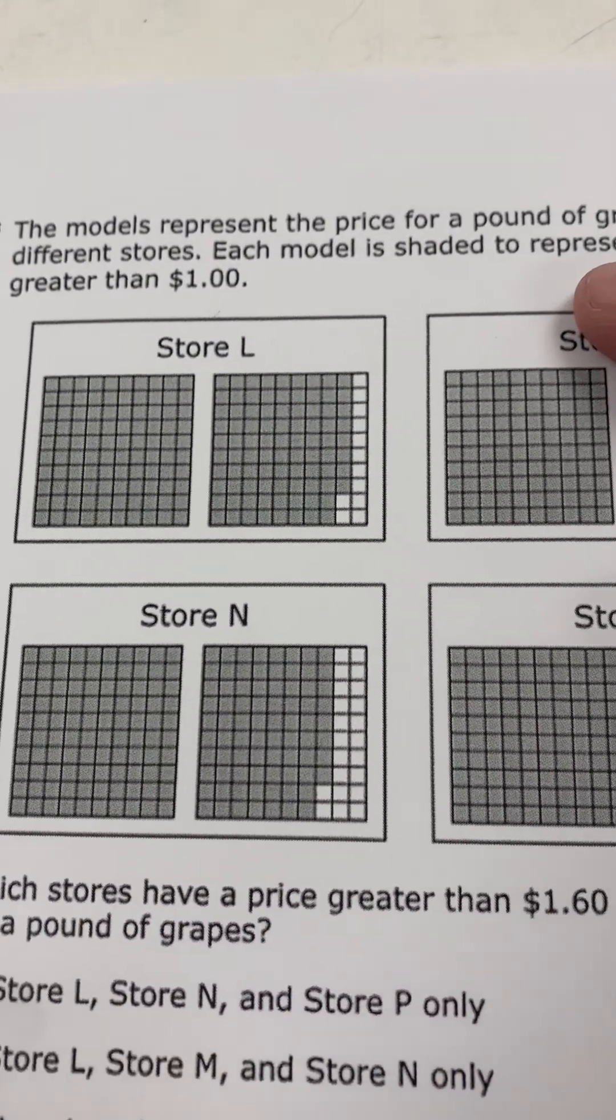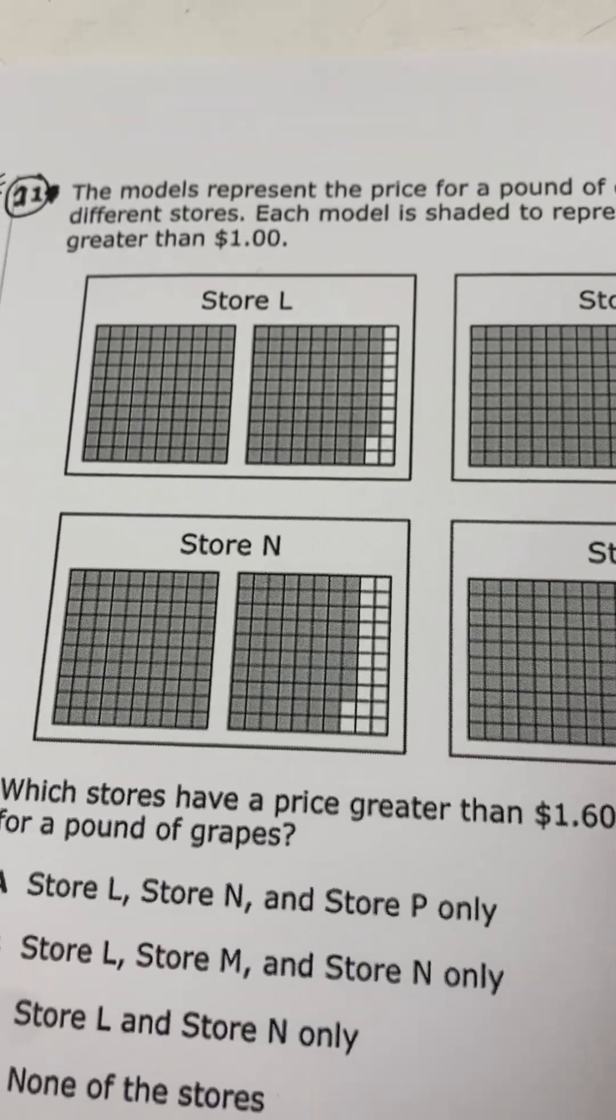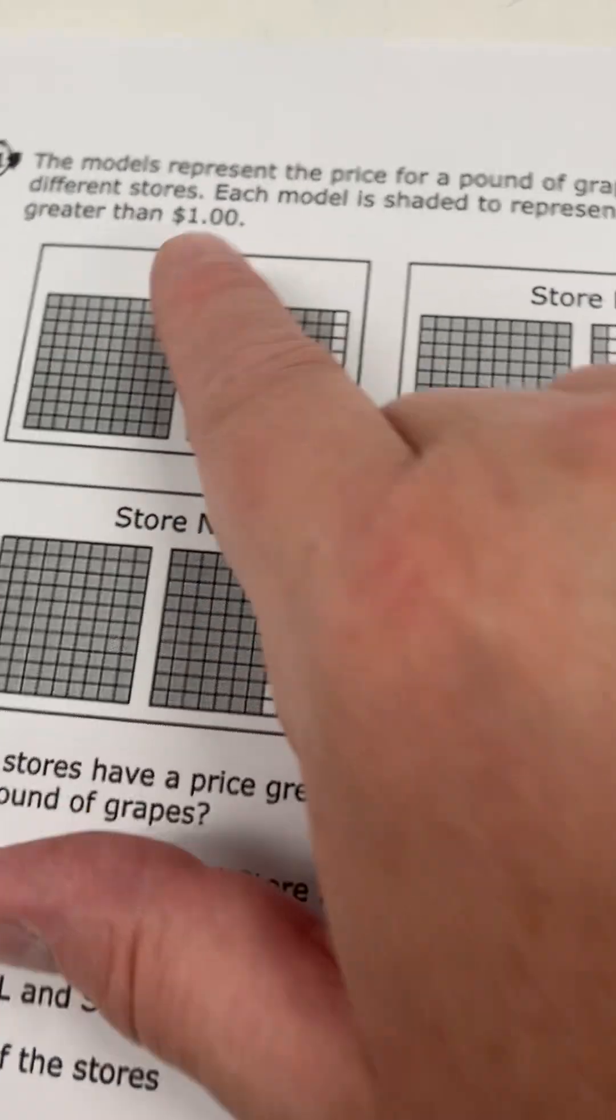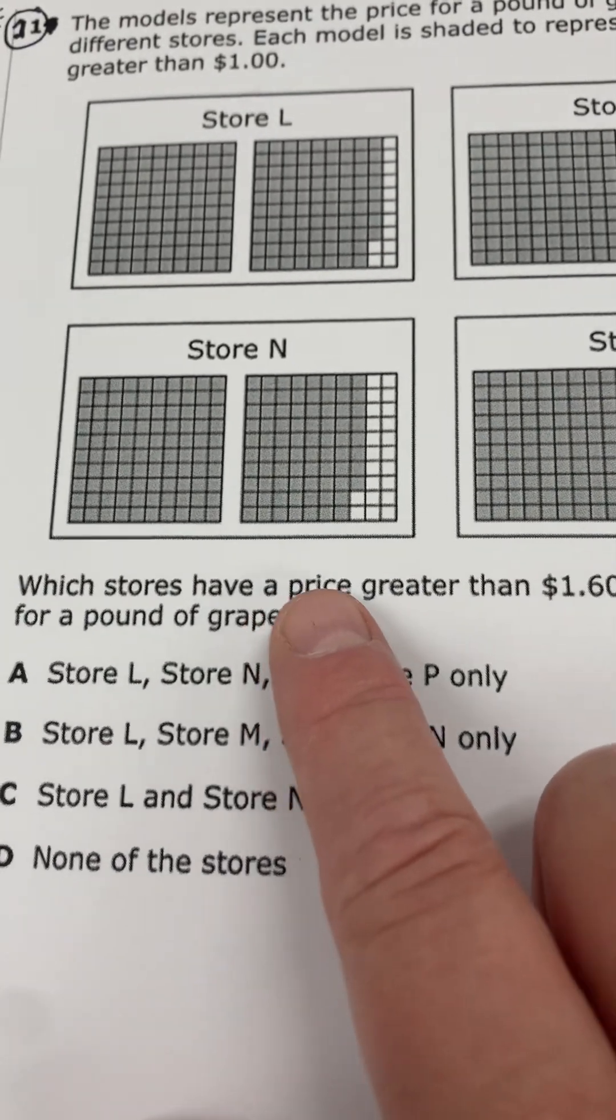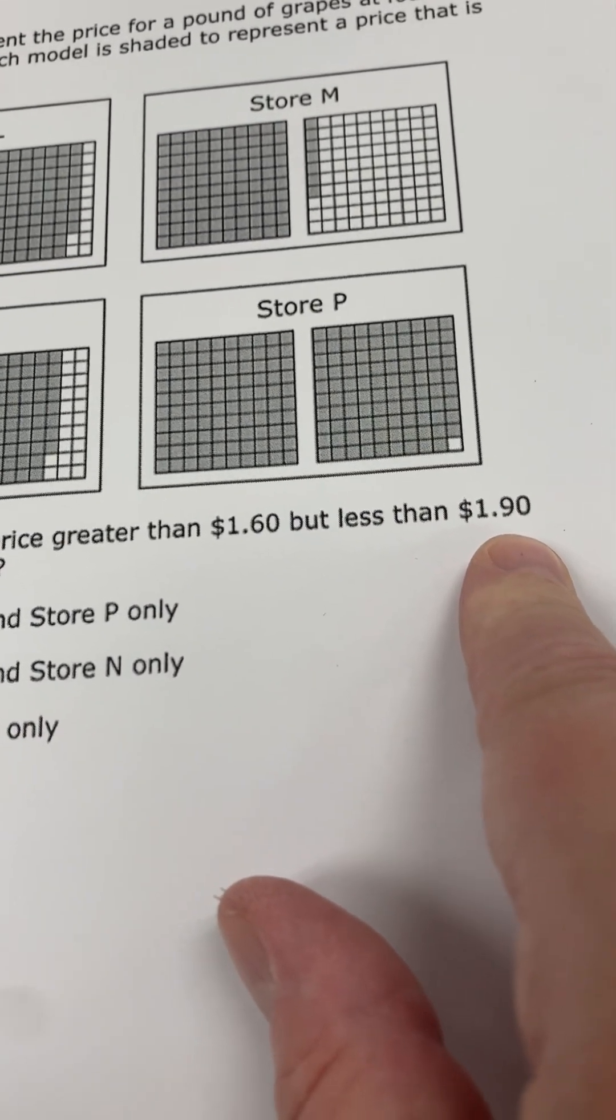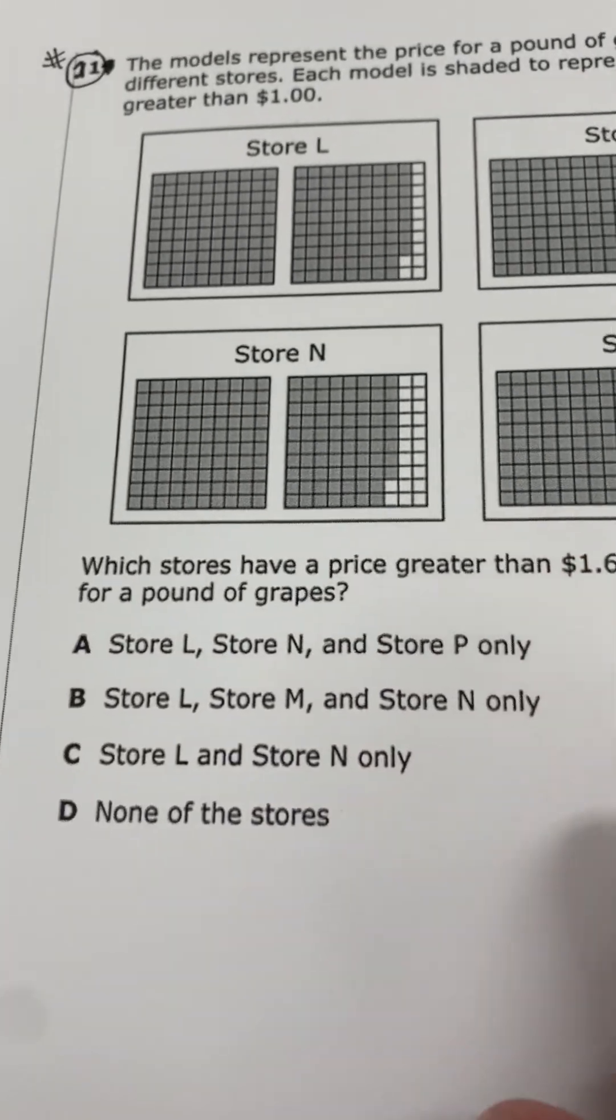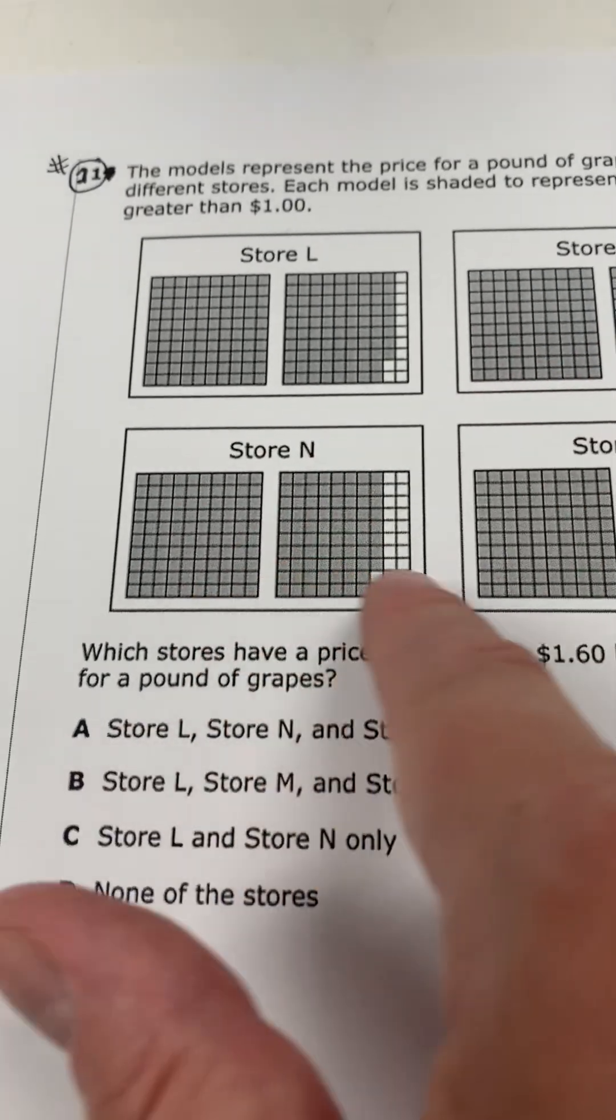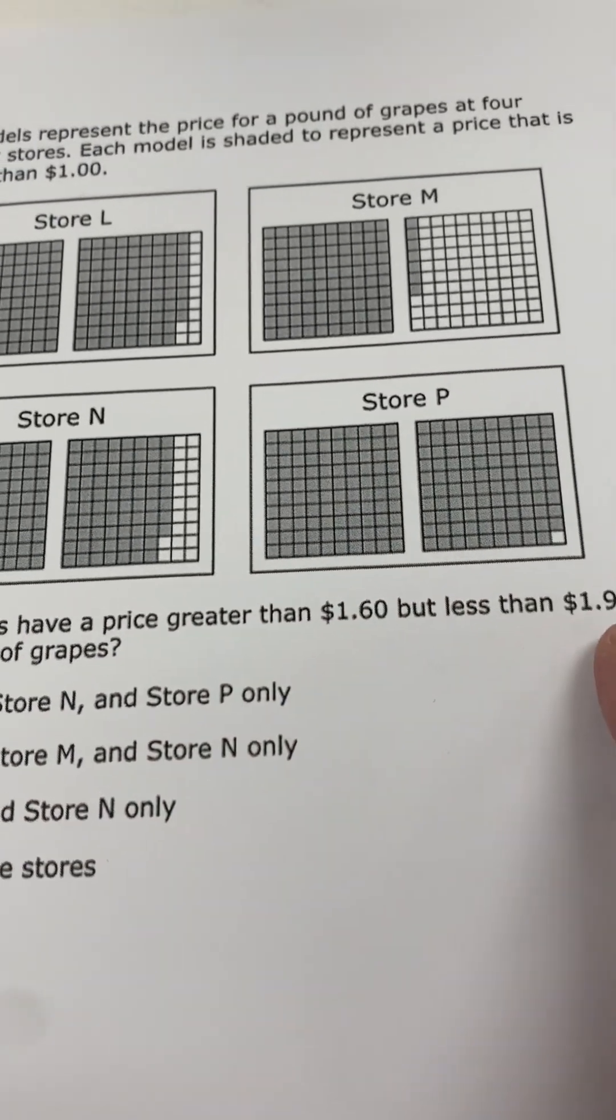It says the models represent the price for a pound of grapes at four different stores. Each model is shaded to represent a price that is greater than $1. So each one is greater than $1. Which stores have a price greater than $1.60 but less than $1.90? Okay? So look at each of those stores. Which ones are greater than $1.60 but less than $1.90?